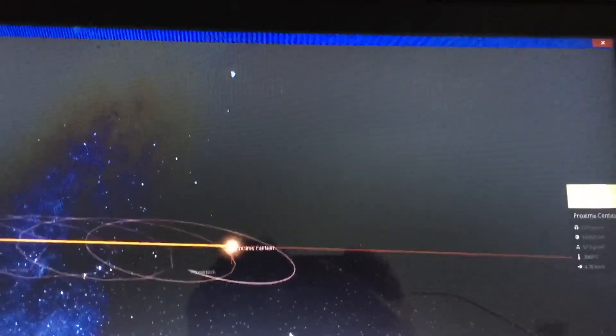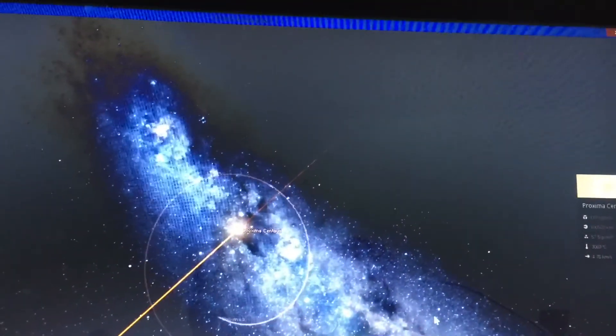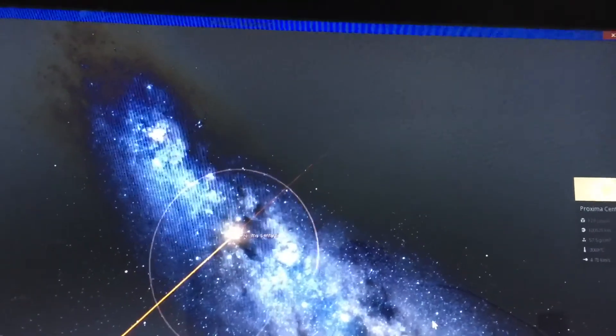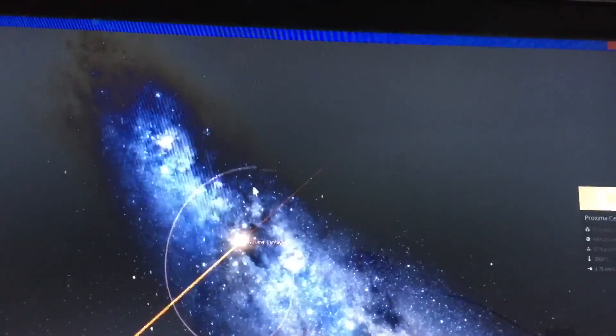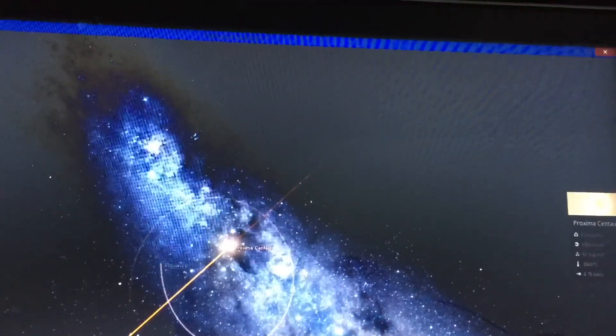Very majestic. A sunset on Proxima Centauri B would look amazing. Imagine a sunset with two bright specks near the sun. Actually, you don't have to imagine it. Here it is.